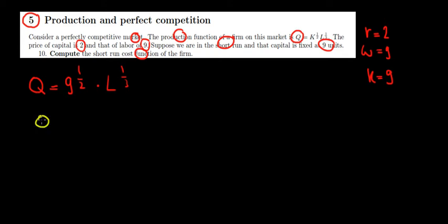So quantity is equal to 3 times labor to the power 1 over 3. Let's write labor as a function of quantity because we're looking for the short run cost function and we know that the cost function is a function of the quantity. How much does it cost us to produce certain units of quantities? That's what we're looking for. So if we play a bit with the math here, we take 3 on the other side, what do we get? We have L to the power 1 over 3 is equal to Q divided by 3.